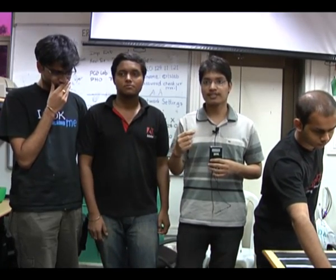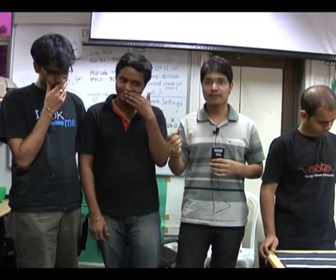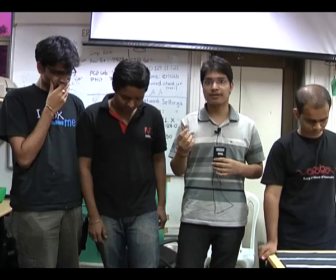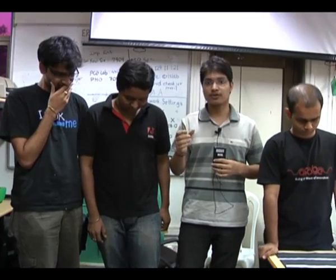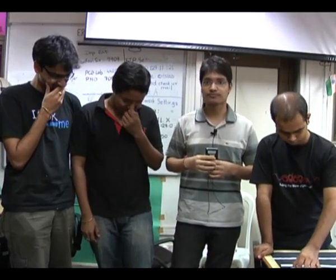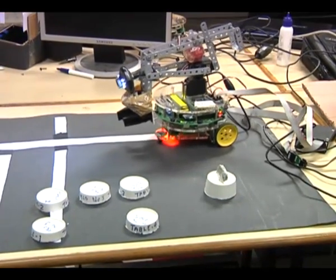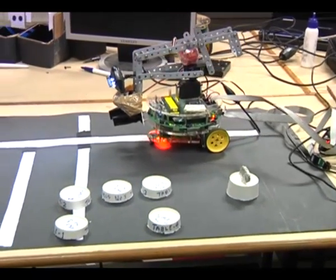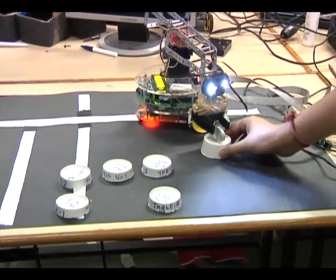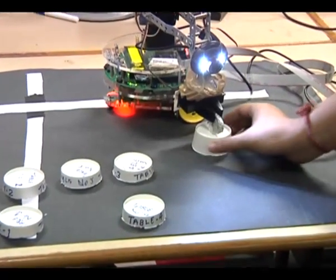Once it identifies the correct order, depending on the table from which the order came, it continues on its destination and depending on the table's coordinates it goes to that table and drops the object. The robot starts at the initial position in the arena and after traversing a particular distance the arm will move left and pick up the object.